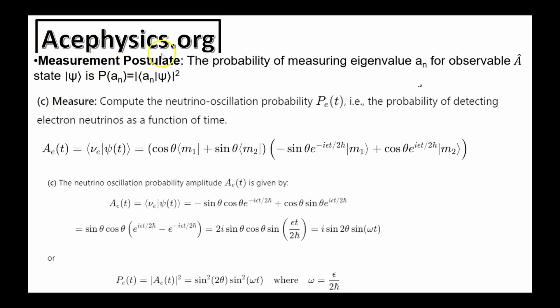Part C is an example of the measurement postulate. Part C says: compute the neutrino oscillation probability — the probability of detecting the electron neutrino as a function of time. The neutrino starts out as a muon neutrino, but as time evolves it changes into an electron neutrino and oscillates back and forth. To find the probability of measuring the electron neutrino, we take the inner product between the electron neutrino state and the wave function, then square it. That's what the measurement postulate tells us: the probability of measuring an eigenvalue a_n is given by |⟨a_n|ψ⟩|².